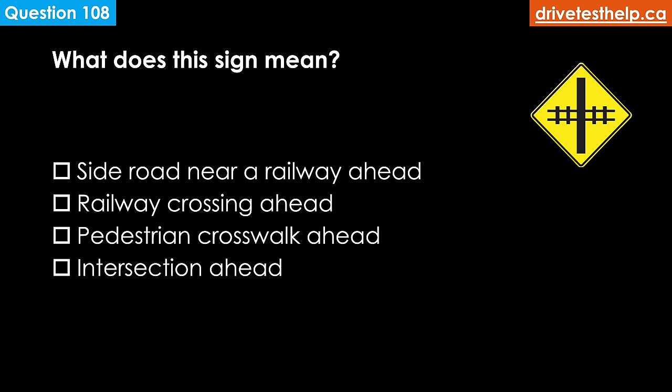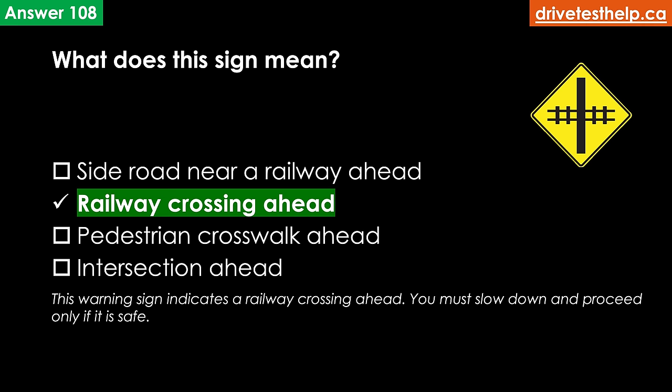What does this road sign mean? Options: side road near a railway ahead; a railway crossing ahead; pedestrian crosswalk ahead; intersection ahead. The correct answer is railway crossing ahead. This warning sign indicates a railway crossing ahead — you must slow down and proceed only if it is safe.